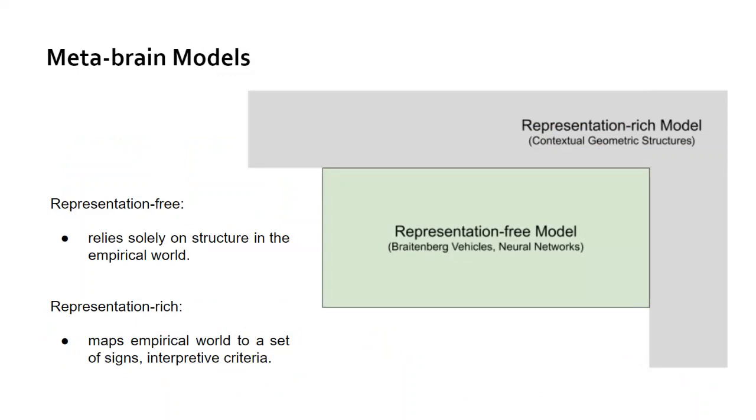I'd like to start with an overarching theme, the idea of metabrain models. Metabrain models have two different components: a representation-free and a representational-rich component. The representation-free component relies solely on the structure found in the empirical world. These are things like Braitenberg vehicles and neural networks. On the other hand, representation-rich components map the empirical world to a set of signs or interpretive criteria, represented by contextual geometric structures. These two different components are combined into a single model in different ways, as a layer or as some quasi-separate thing.